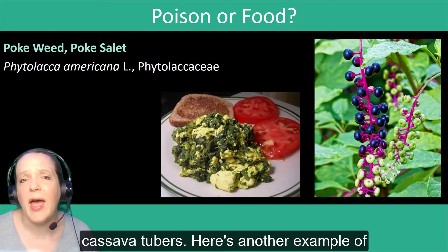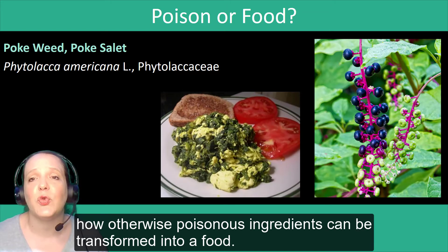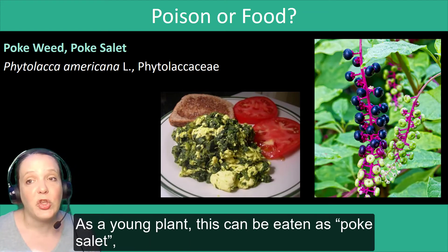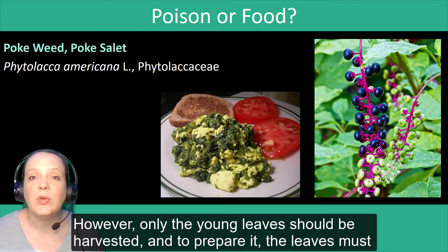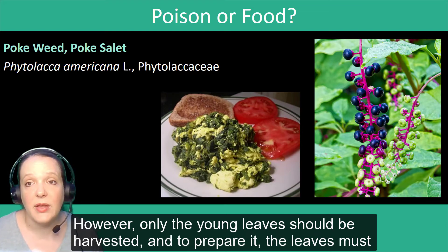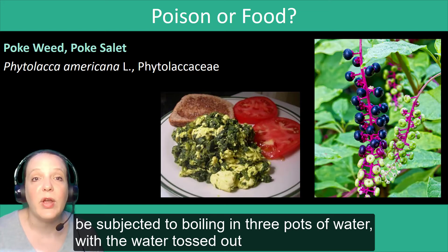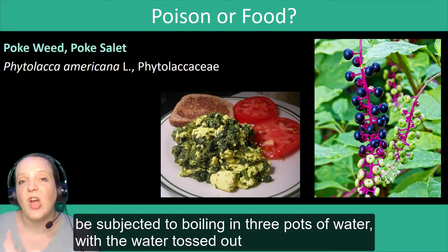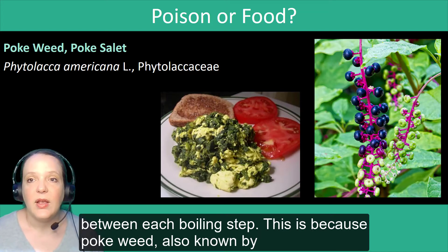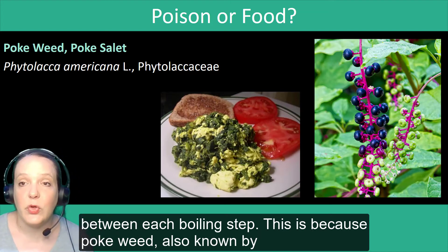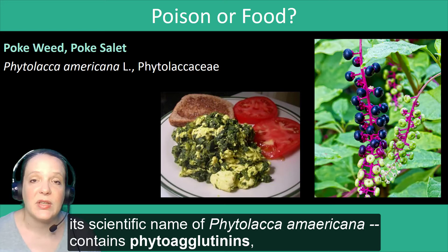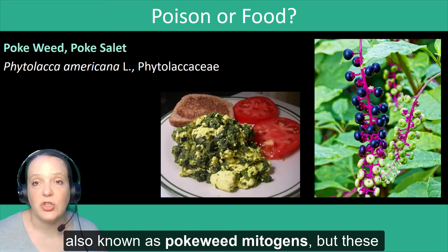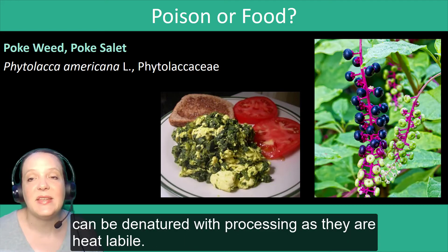Here's another example of how otherwise poisonous ingredients can be transformed into a food. As a very young plant, pokeweed can be eaten as poke salad. However, only the young leaves should be harvested, and to prepare it, the leaves must be subjected to boiling in three pots of water, with the water being tossed out between each boiling step. This is because pokeweed, also known by its scientific name Phytolacca americana, contains phytoagglutinins, also known as pokeweed mitogens. These can be denatured with processing, as they are heat labile.